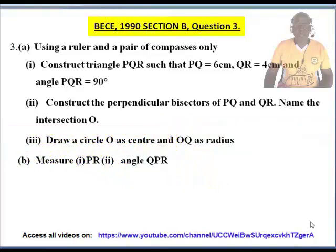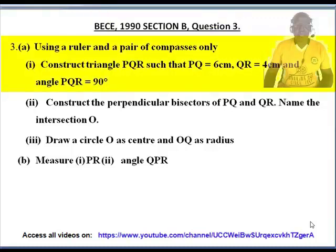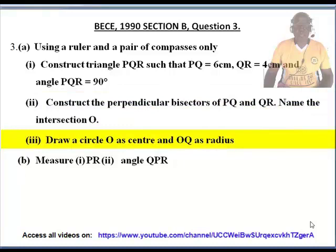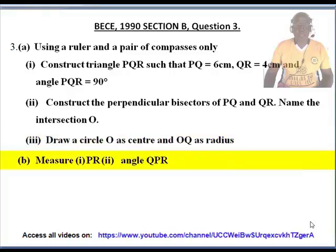BECE 1990 Section B, Question 3. Using a ruler and a pair of compasses only, construct a triangle. Draw the perpendicular bisectors of PQ and QR, and name their intersection O. Then draw a circle with O as center and OQ as radius.